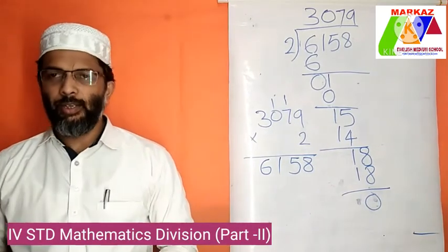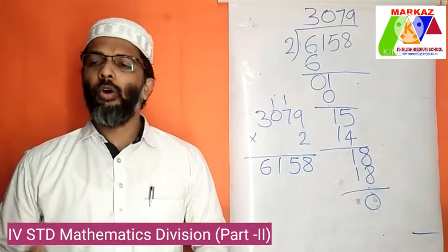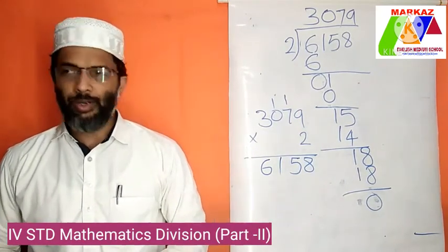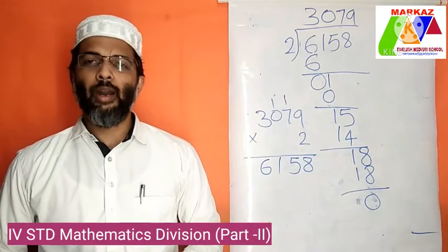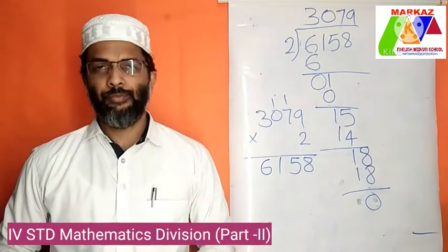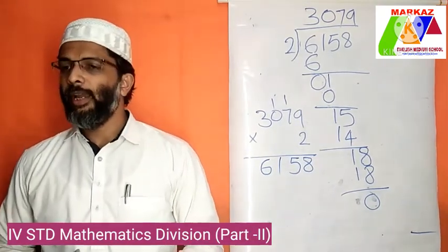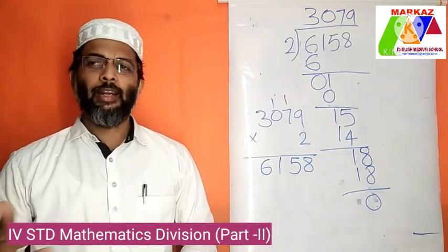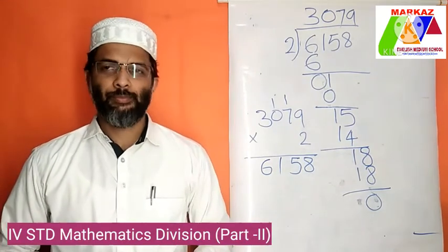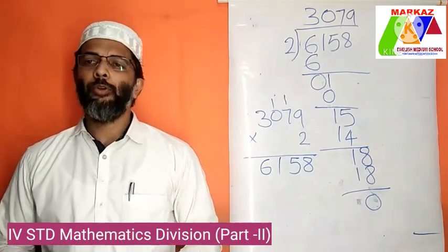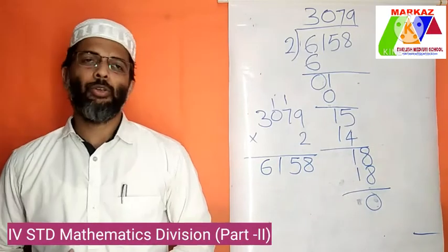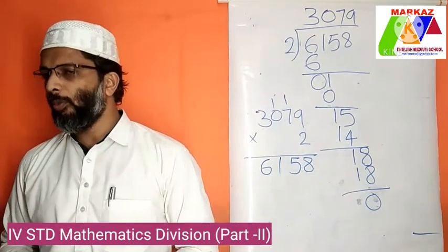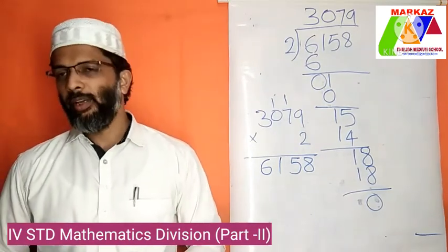I am concluding today's class here. Please note your homework: page number 125, exercise number 6.3, question number 1, A to F; question number 2, find the quotient and check your answer. To check your answer, multiply the divisor with the quotient. All of you do today's homework in your notebook and send it to the school WhatsApp number. You will learn more about division word problems in the next class. Thank you.